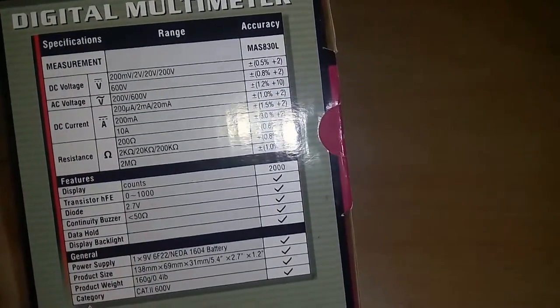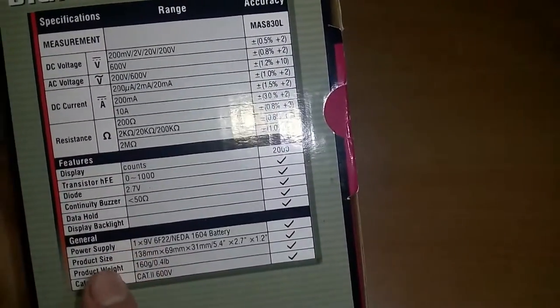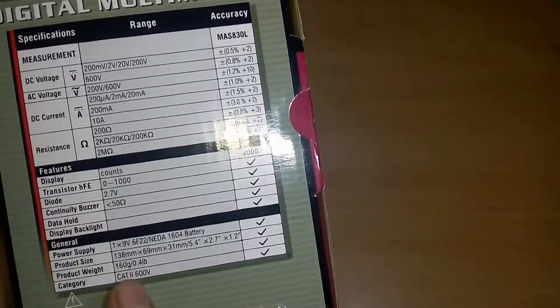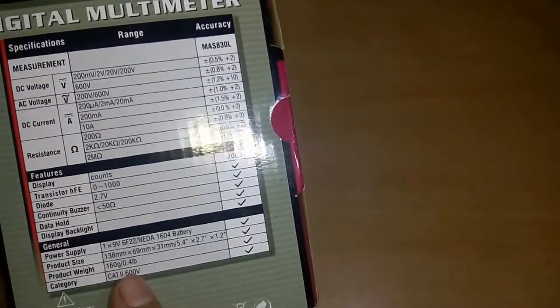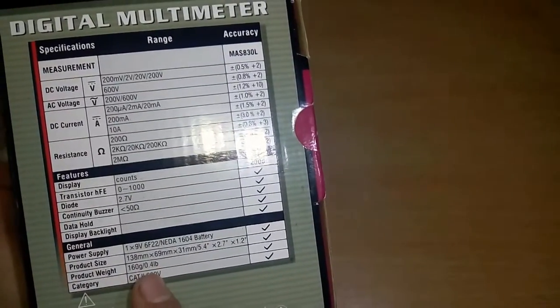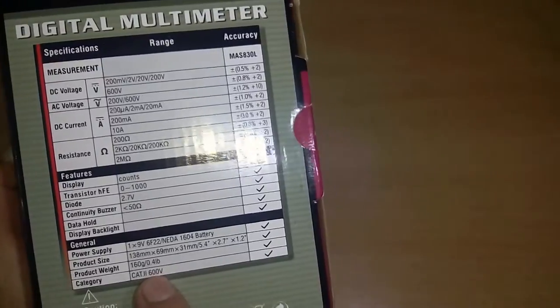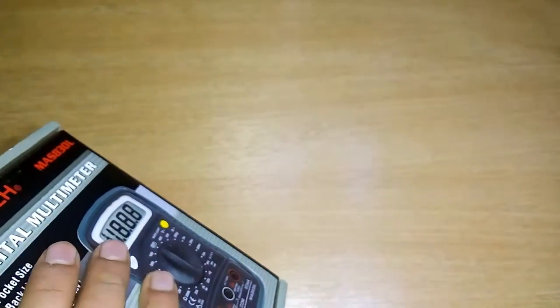the data hold option which is a plus point. Power supply is a 9-volt battery, product size, product weight—which feels and seems not very light, it's a medium weight multimeter.